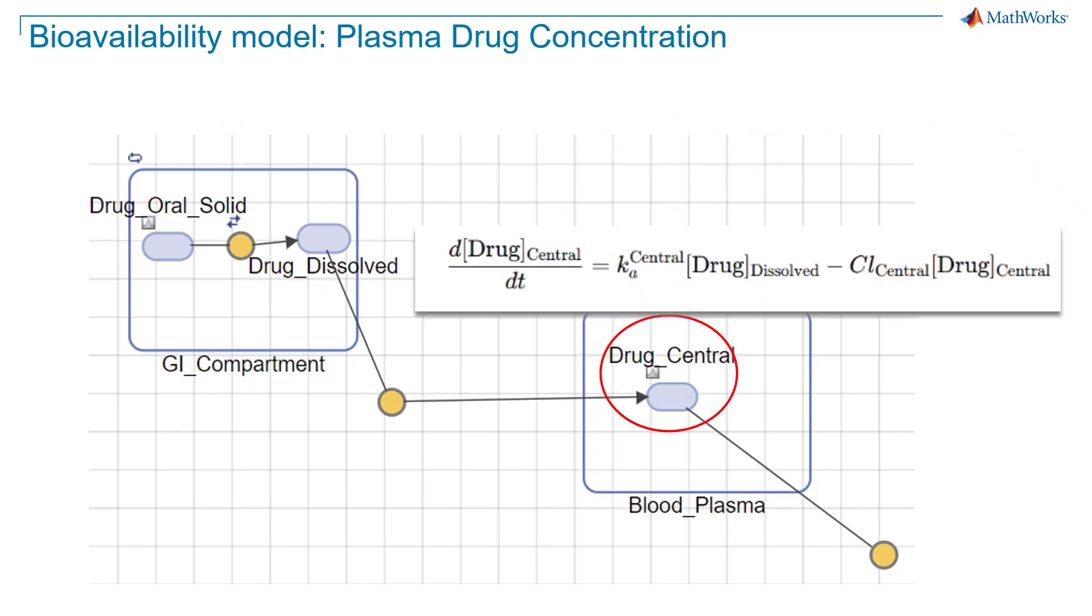The last equation models how the drug concentration in the central compartment changes over time by capturing both drug absorption into the blood stream and drug clearance from it. CL_central is the clearance rate constant with units of one over hour.